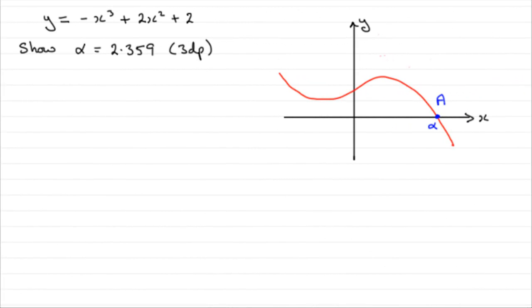Now in this part of the question, the last part, we've got the equation of the curve y equals minus x cubed plus 2x squared plus 2, and we've got to show that this root alpha is equal to 2.359 to 3 decimal places.